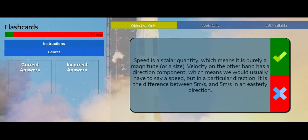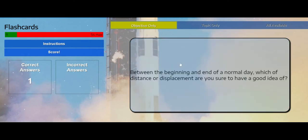Speed is scalar, which means it's a magnitude, velocity has direction. Good. I got that right, although I didn't say enough detail. So I'm going to give myself a tick for that. And you'll notice now my correct answers goes up to one.